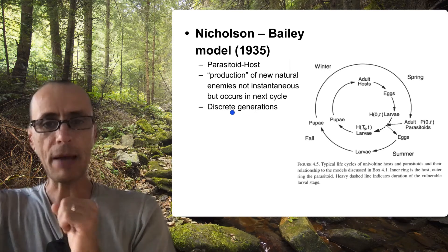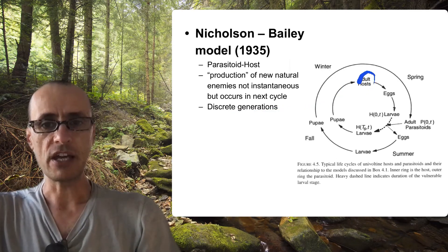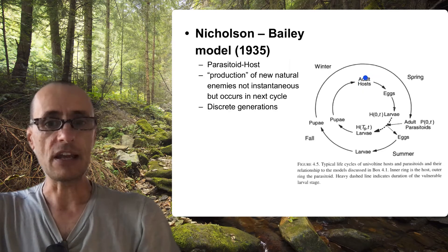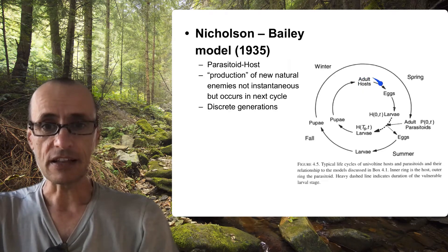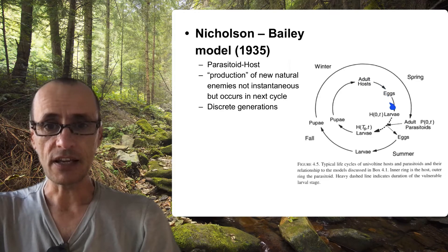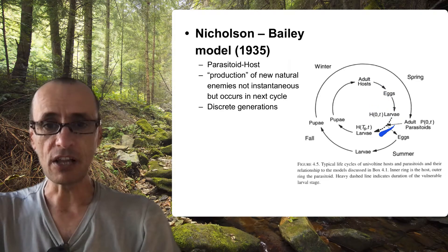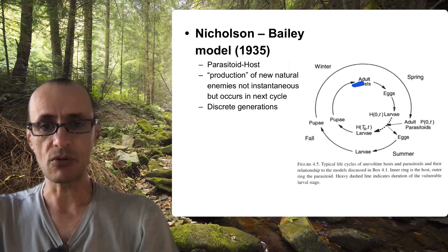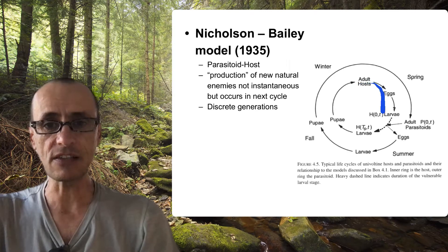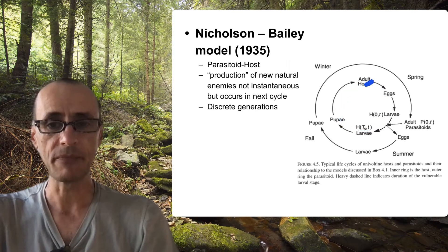So what happens in this model is that a group of hosts have, let's imagine, an annual life cycle. They lay their eggs, they lay their larvae right here, the larvae develop through some stages, they eventually pupate, and they go back to the adult stage. So let's imagine that this whole thing takes one time step.